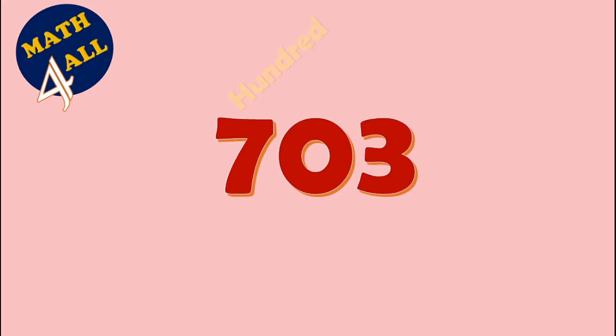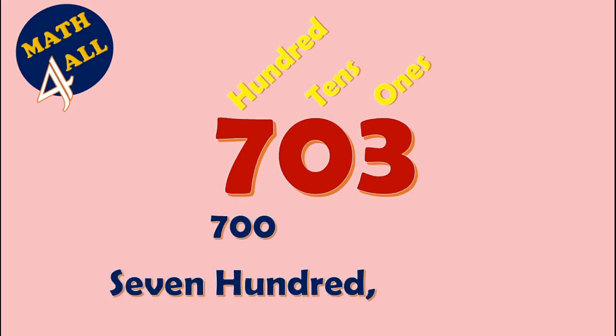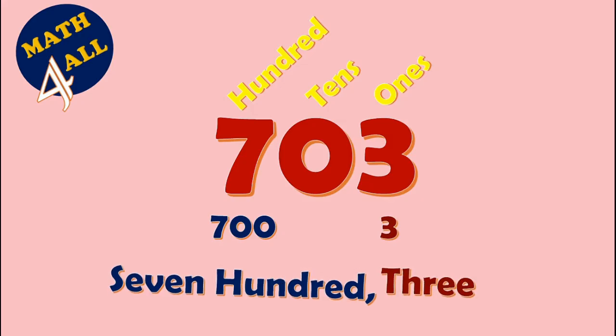Let's see the next. Here we go — can you read this? Yes! Seven in the hundreds place is 700. Ignore reading zero in any number. And three in the ones place is just three. So the number is 703.